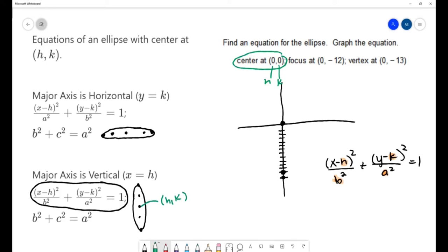We also need to know what a and b stand for. a is the distance between the center and a vertex. b is the distance on the shorter side, and c is the distance between the center and the focus. We can see here that our a is from the center to this vertex here and that is a distance of 13.